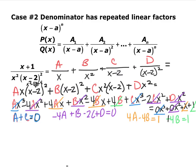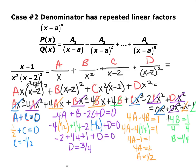We now have four equations with four unknowns. From the constants equation, divide by 4: b equals one-fourth. Plugging that into the x equation gives a equals one-half. Plugging a into the first equation gives c equals negative one-half. Plugging all three into the x squared equation gives d equals three-fourths. The final answer is: one-half over x, plus one-fourth over x squared, plus negative one-half over x minus 2, plus three-fourths over x minus 2 squared.